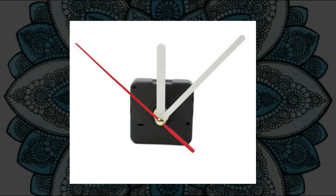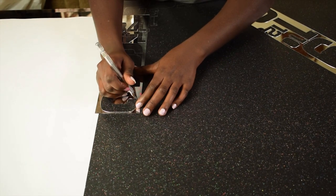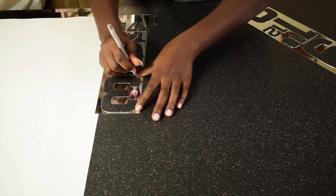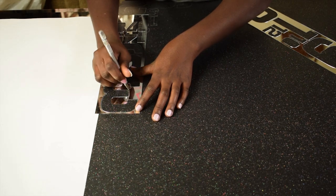So you first start by marking out the numbers on your piece of paper using your stencil. You can also print out the numbers on a piece of paper and use them as stencils.